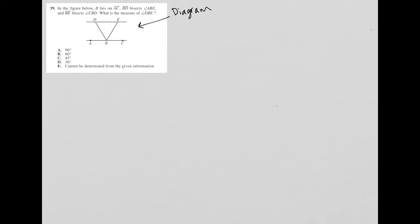The question says: in the figure below, B lies on line segment AC. So we see that line segment AC is this line, and B is between A and C.